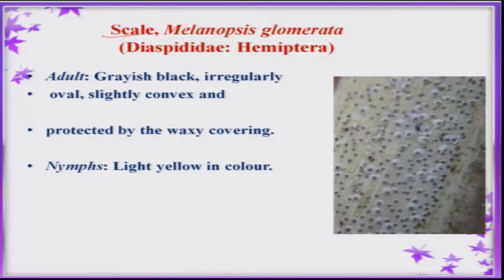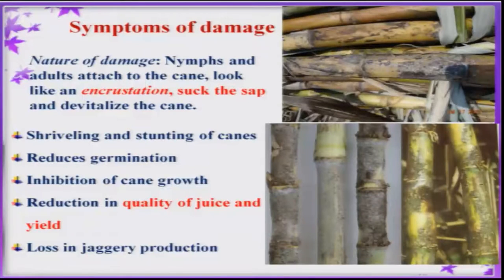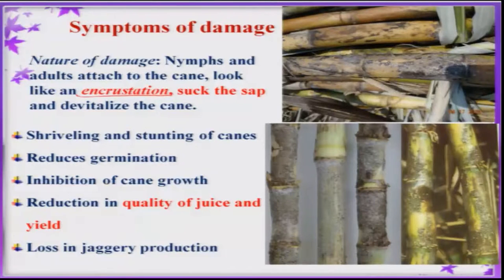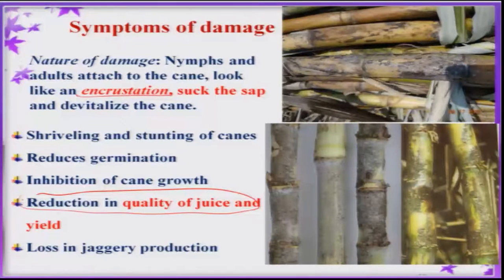Scale insect is also sometimes very serious in some areas like Andhra Pradesh, Gujarat, Maharashtra, and Karnataka. Both nymphs and adults suck the sap continuously. Because of this sucking, the overall plant growth is stunted and you can see encrustation on the stem and sometimes even on the leaf. Because of continuous feeding, there is reduction in juice quality and yield, and overall there is reduction in even jaggery production.